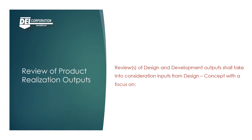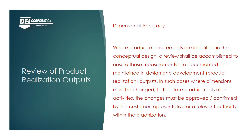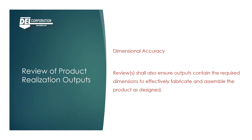Reviews of design and development outputs shall take into consideration inputs from design concept with a focus on dimensional accuracy. Where product measurements are identified in the conceptual design, a review shall be accomplished to ensure those measurements are documented and maintained in design and development outputs. In cases where dimensions must be changed to facilitate product realization activities, the changes must be approved or confirmed by the customer representative or a relevant authority. Reviews shall also ensure outputs contain the required dimensions to effectively fabricate and assemble the product as designed.